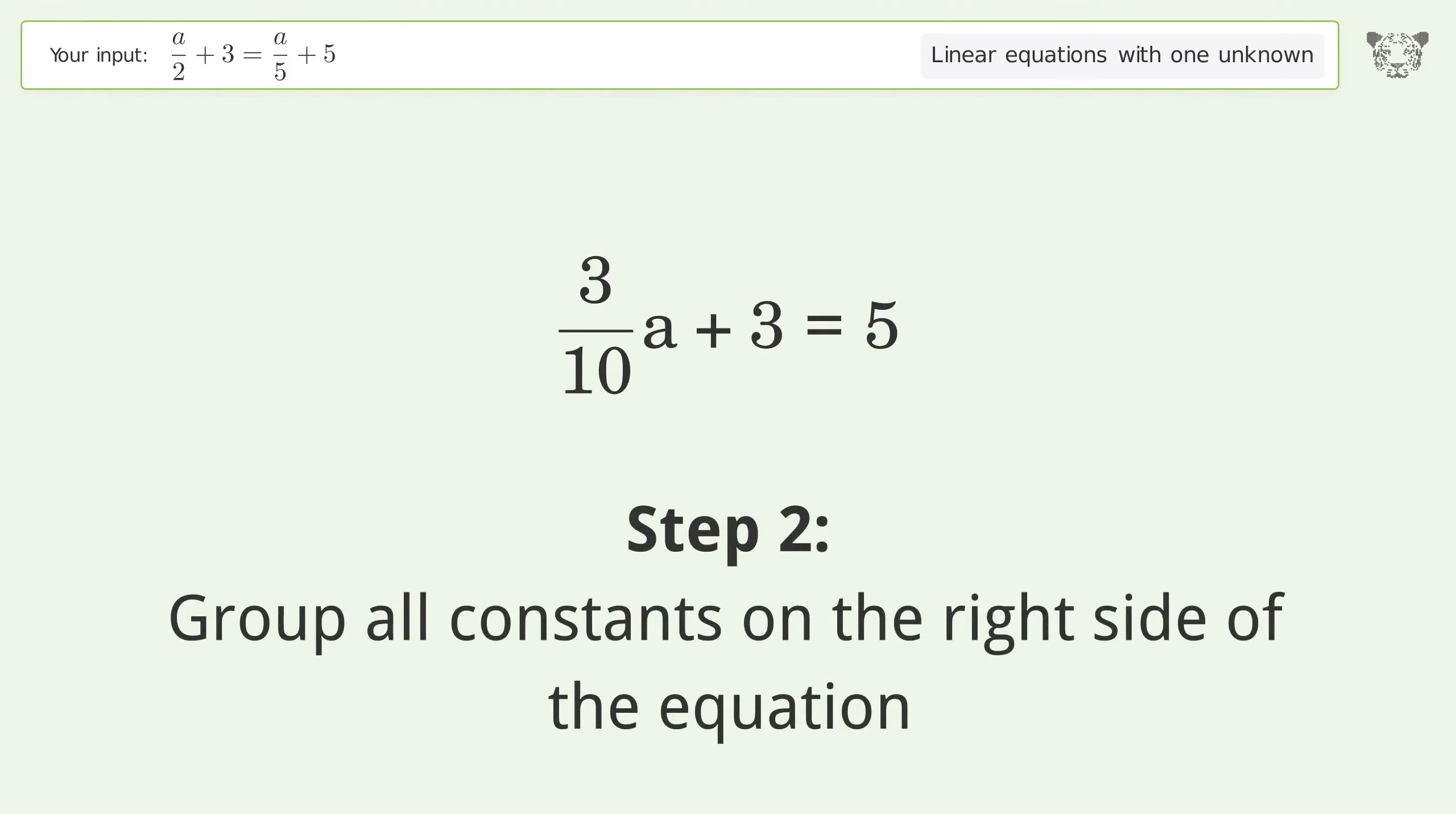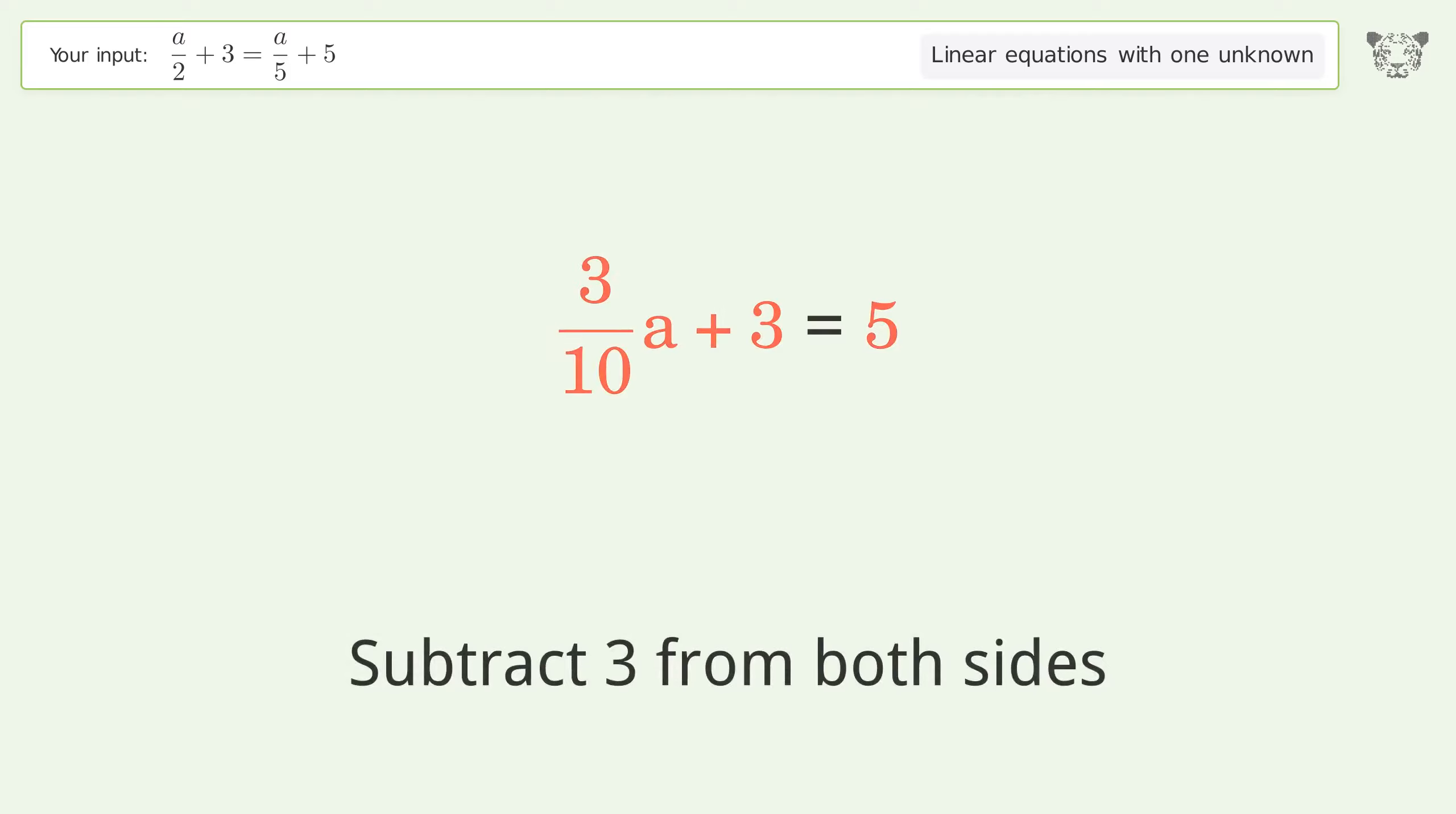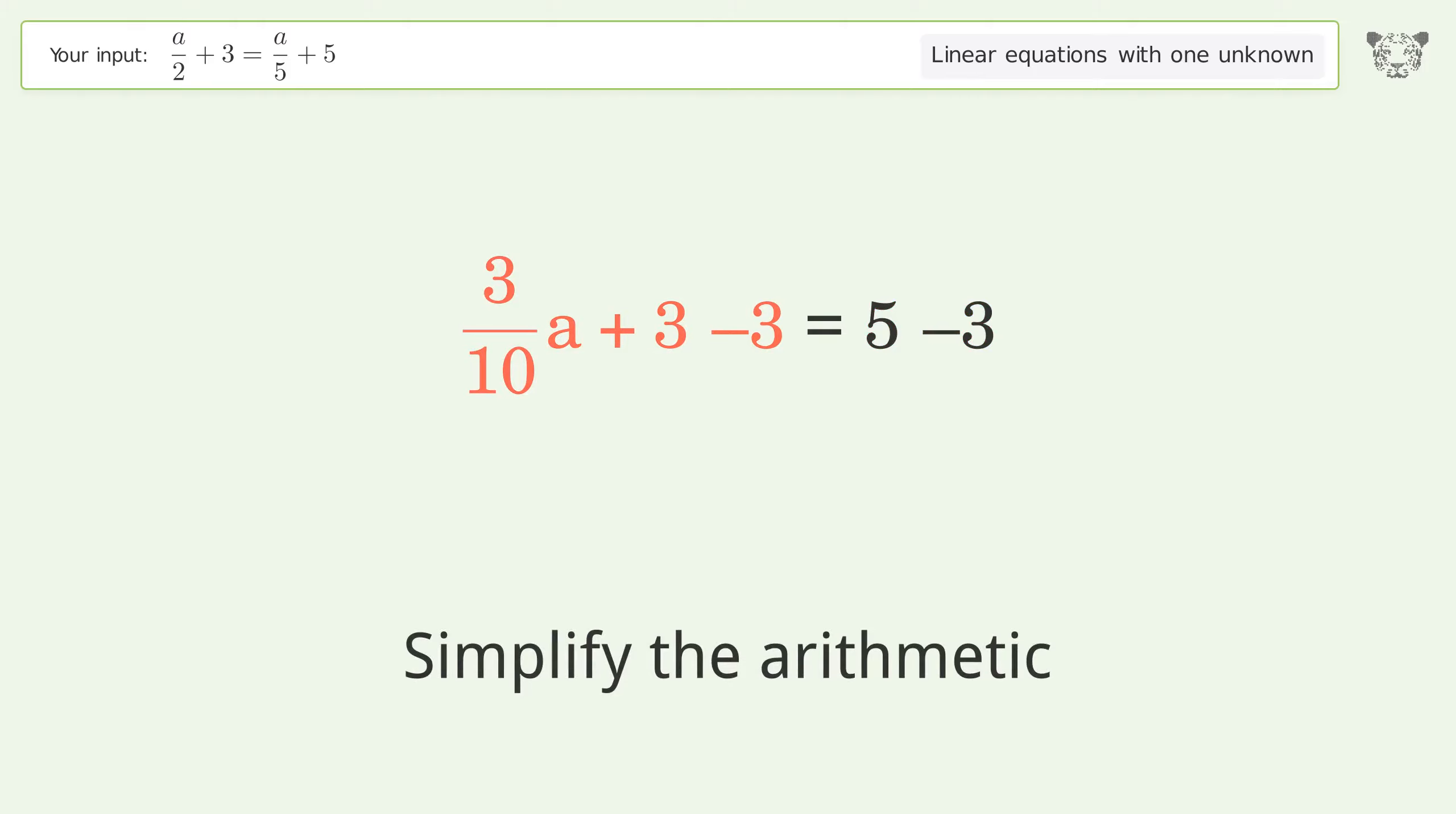Step 2: Group all constants on the right side of the equation. Subtract 3 from both sides. Simplify the arithmetic.